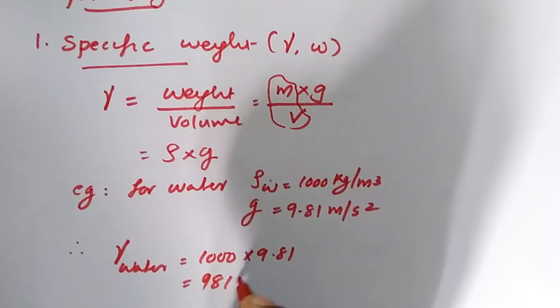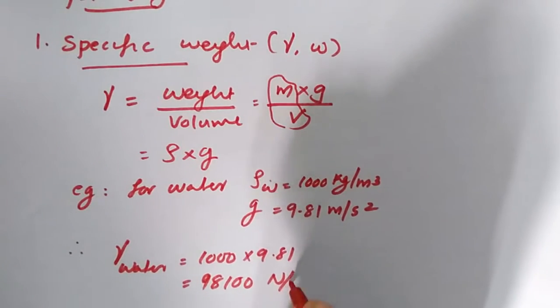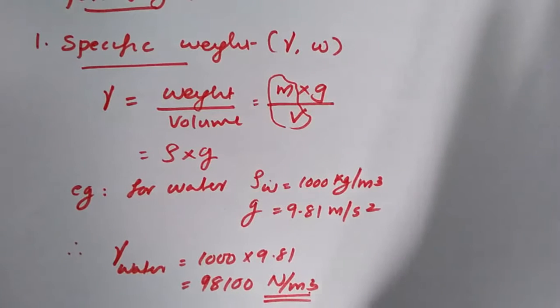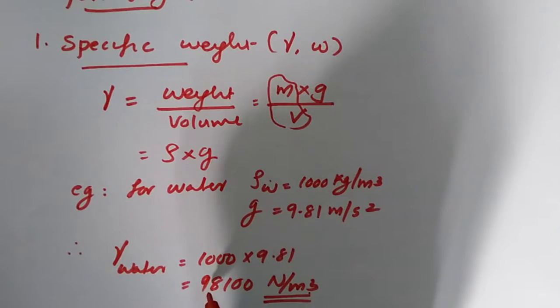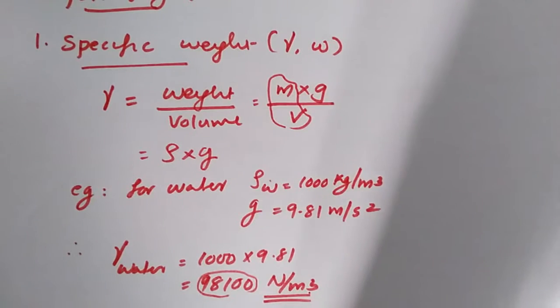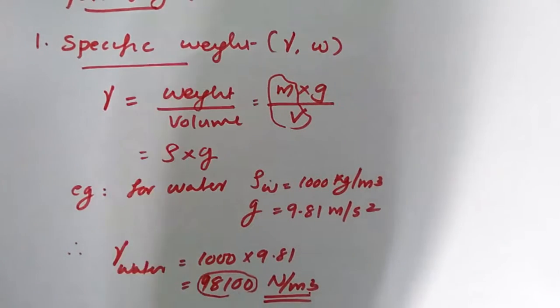So the specific weight of water, that is gamma water, will be thousand into nine point eight one, that's equal to nine eight one double zero Newton per meter cube. That is, one unit volume, one meter cube of water will weigh this much Newton weight.